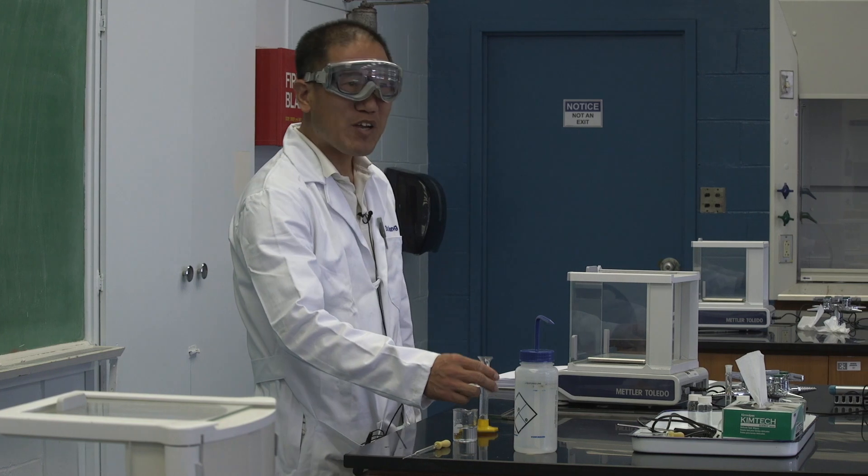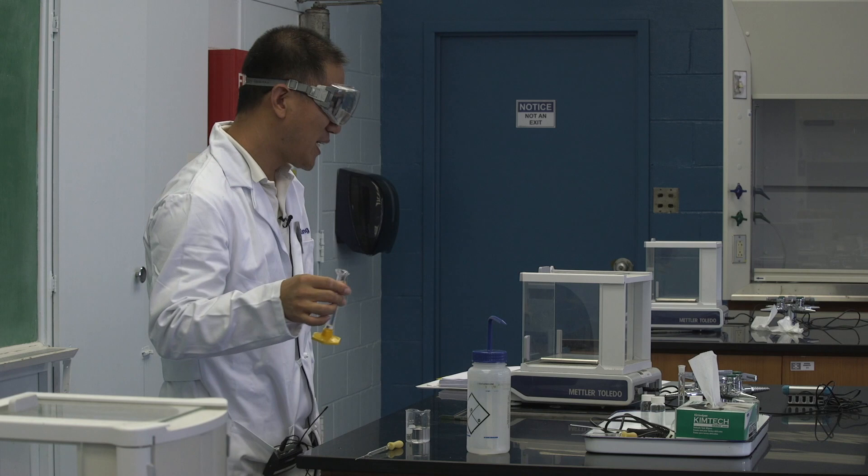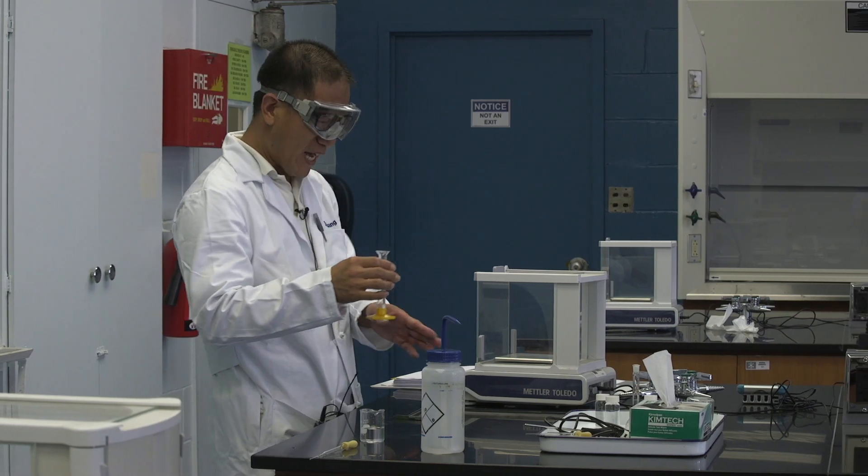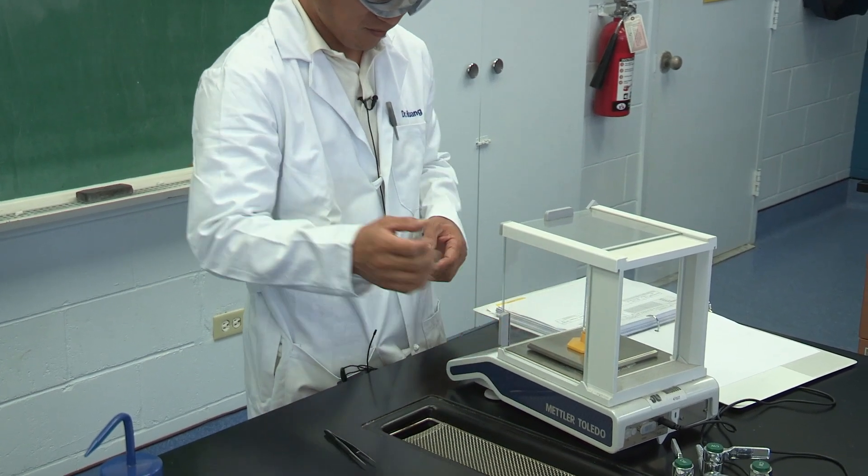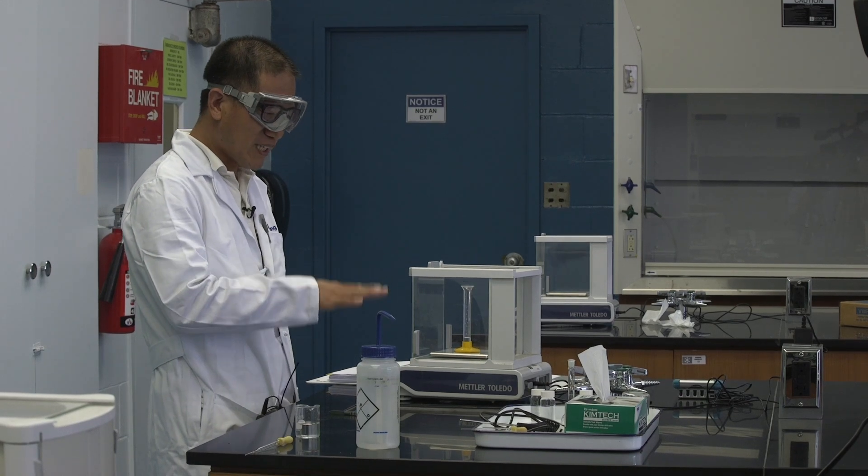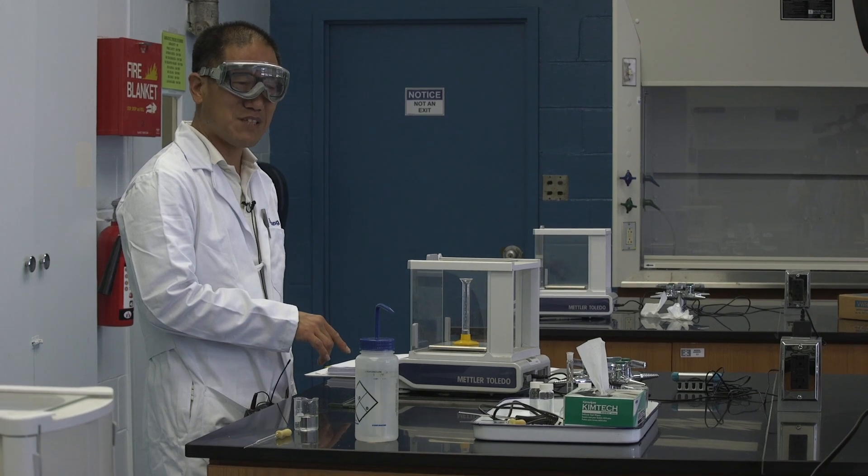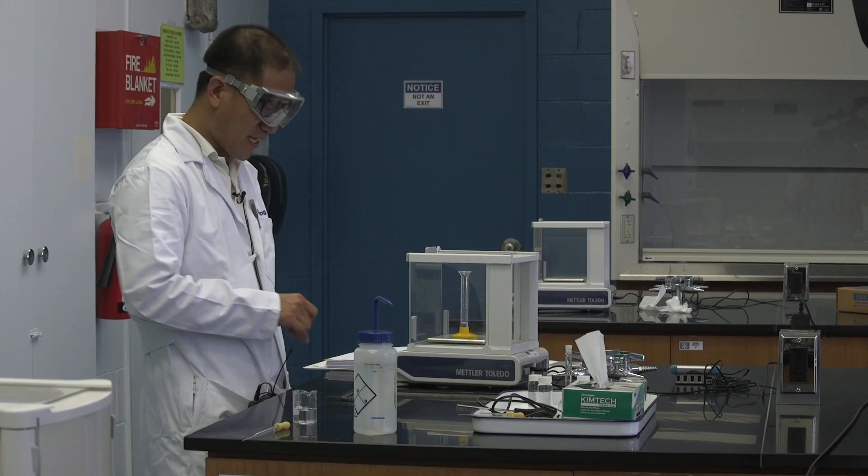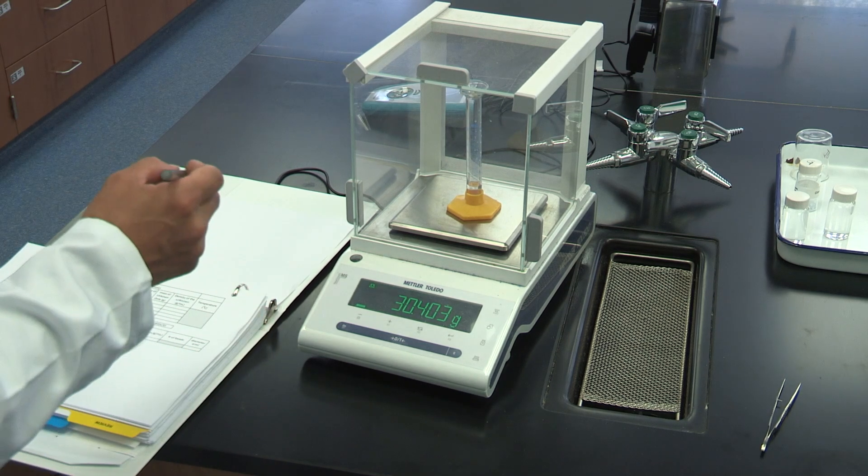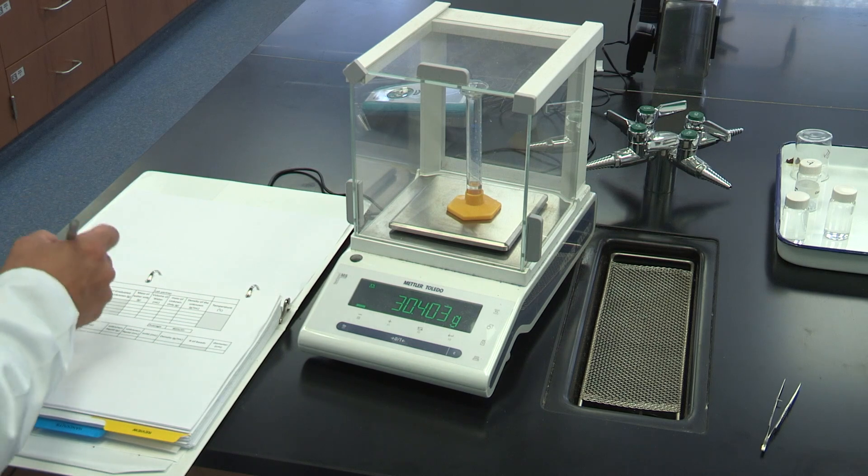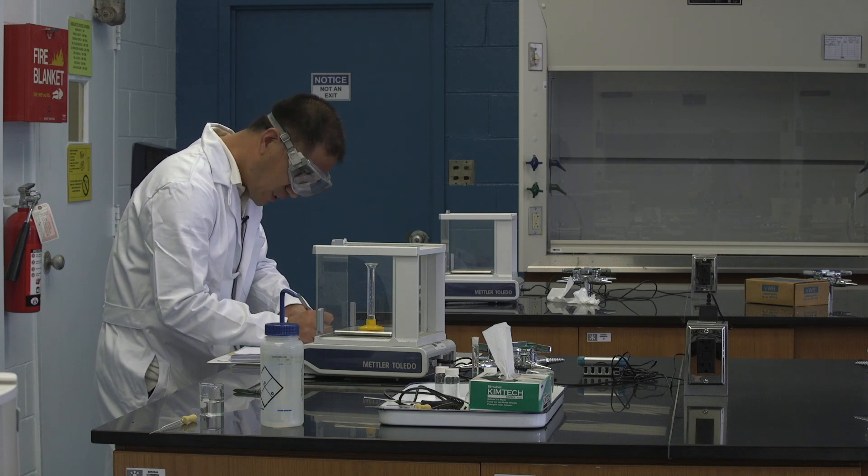And then the next step, we want to get the mass of the graduated cylinder with the water. Again, we use the electronic balance to do that. Make sure before you put the graduated cylinder on top of the balance, you have to make sure the reading was zero. If it's not, press the button in the center. And the reading is 30.403 grams. So let's put them in our notebook. 30.403.